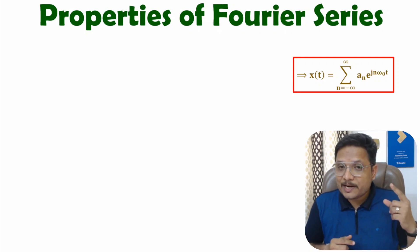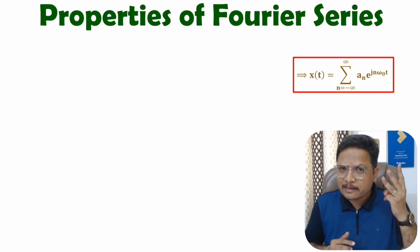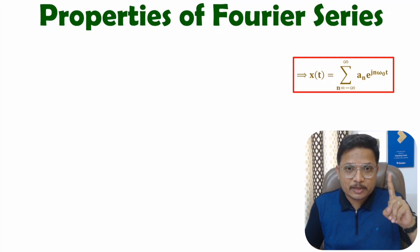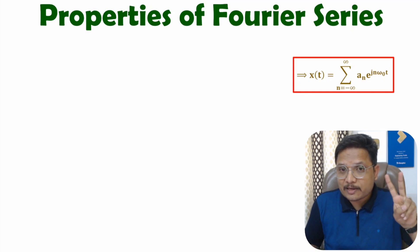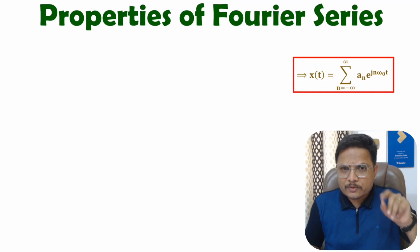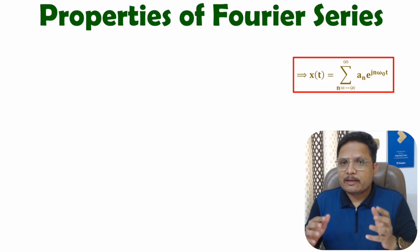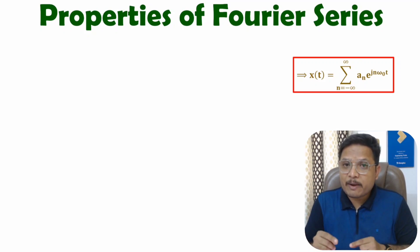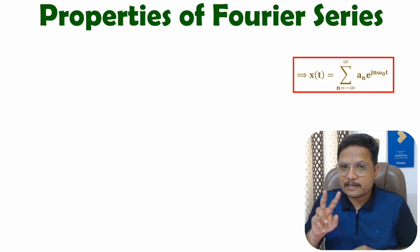In my last video, I discussed about types of Fourier series. In general, there are three types: the exponential Fourier series, trigonometric Fourier series, and polar Fourier series. Usually we use exponential and trigonometric Fourier series, so in this video I will discuss properties of Fourier series with respect to both of those.